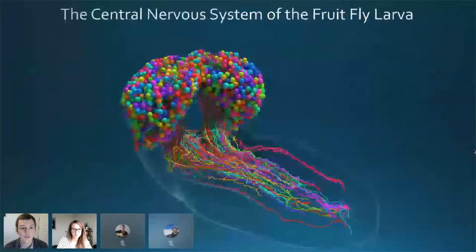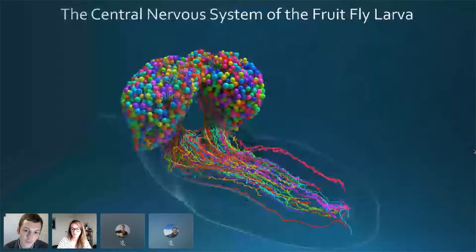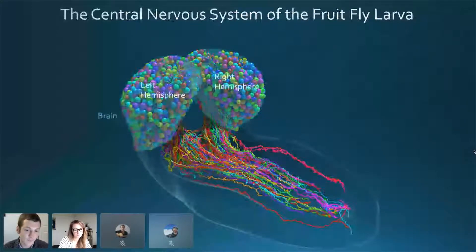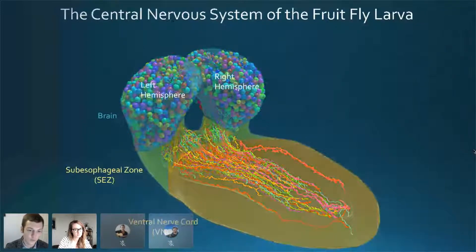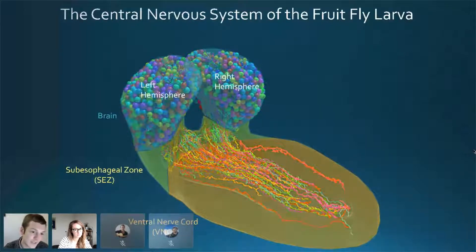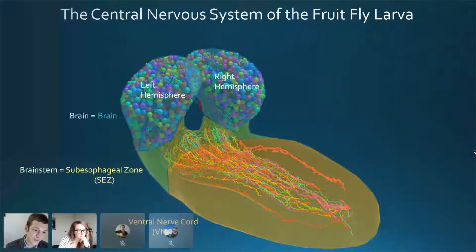And this is what we get in the end. You're looking at the left and right brain hemispheres here, fully reconstructed, the subesophageal zone right below the brain, and then the ventral nerve cord. The brain you can think of simply as the brain; the subesophageal zone is the equivalent of the brain stem, while the ventral nerve cord is the equivalent of the spinal cord.